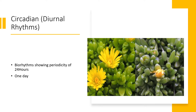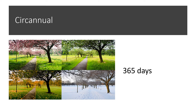Plants have an internal clock, an internal timekeeper called the circadian clock, which detects environmental stimuli like light, temperature, and photoperiod. These environmental factors — day length, temperature, and light — are important for the clock.